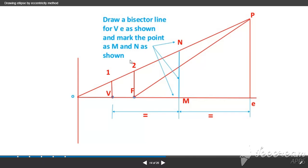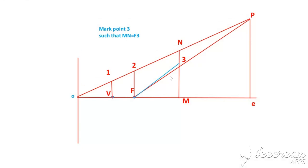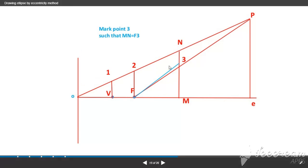Here is a bisector line. Mark point D such that MN equals F3. These are equal lines.